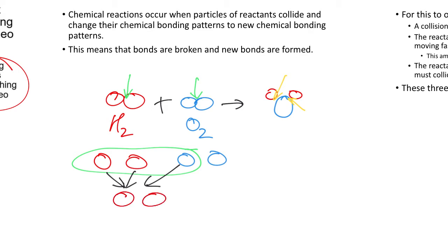So effectively, the hydrogen molecule has to split apart and the oxygen molecule has to split apart, and then they come together to form a new water molecule. They break the bonds apart and then reform them again — that is what happens during a chemical reaction.